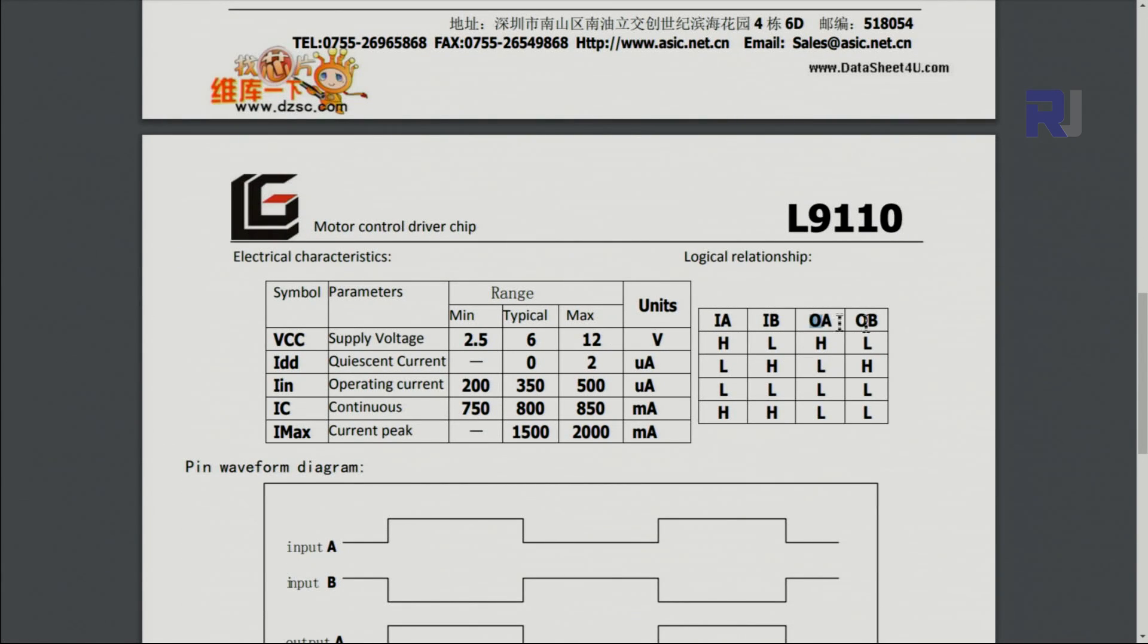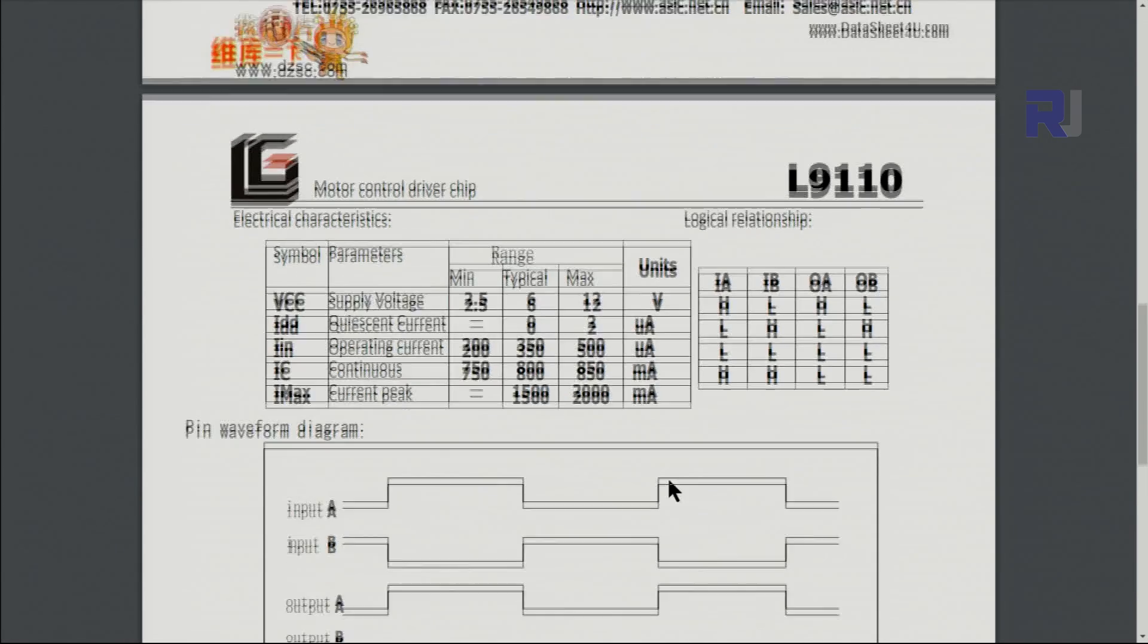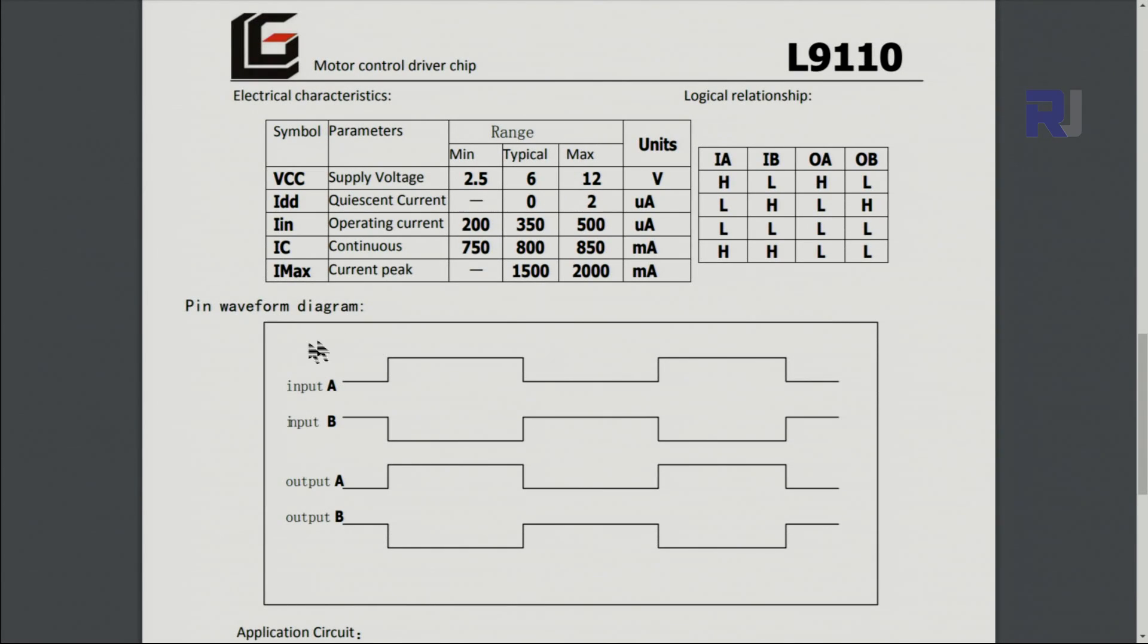Here is a truth table. If input 1A is high, this is low, then you see why IA and outA are together. They change. If this is high, that will be high. If this is low, that will be low, and so forth.